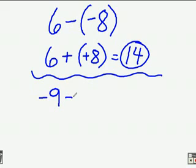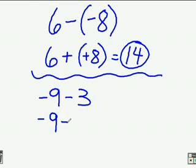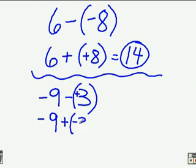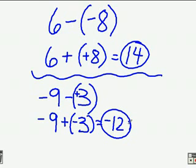Negative 9 minus 3. Keep this first one the same: negative 9. Change to plus. This was a positive 3, so we're going to make it a negative 3. Then we've got the same sign, so we're adding, and we have to give it a negative sign. So it's negative 12.